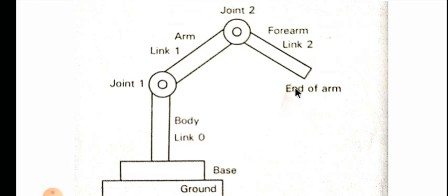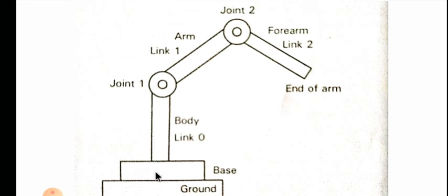At the end of the arm you will see the end effector. An end effector is a device at the end of the robotic arm which is shaped like a hand or as a special tool, depending upon the application. You can use different end effectors for different applications. The base is what supports the entire robot arm.